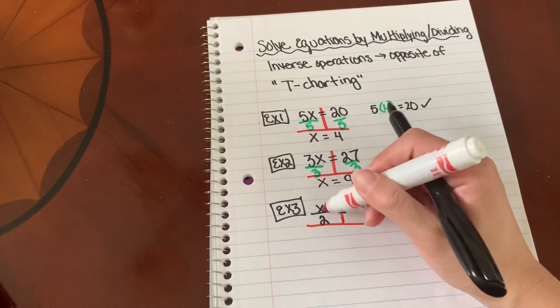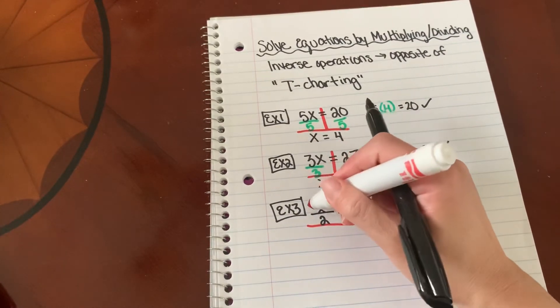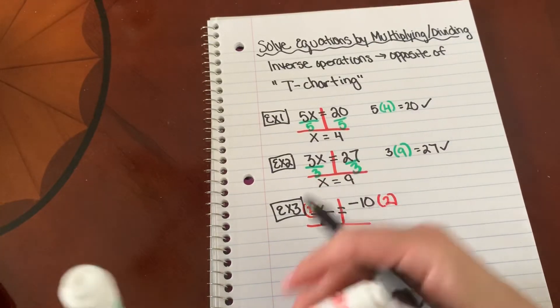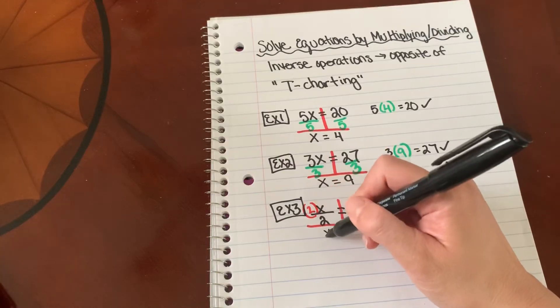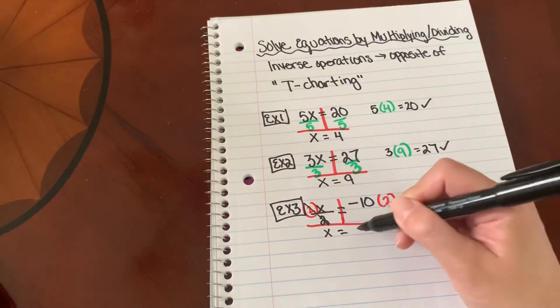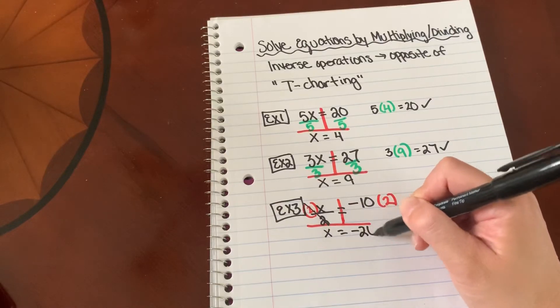Now, what is the inverse of division? Multiplication. So we're going to multiply both sides by 2. 2 divided by 2 over here is 1x. And you can cross this out if you want. What is negative 10 times 2? Negative 20.